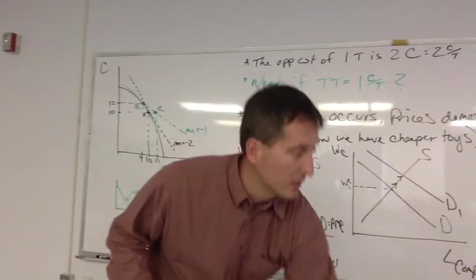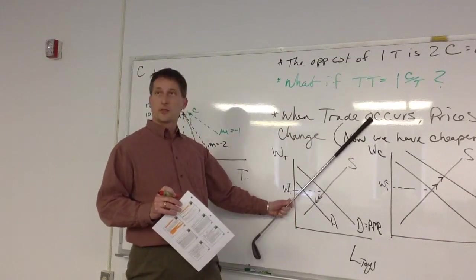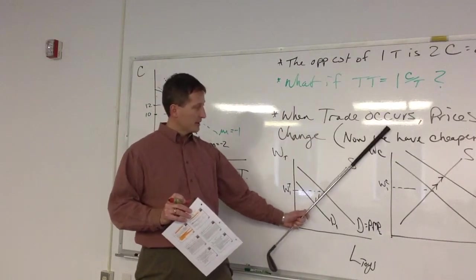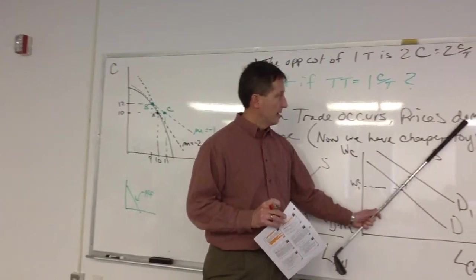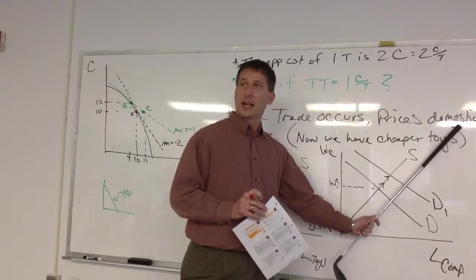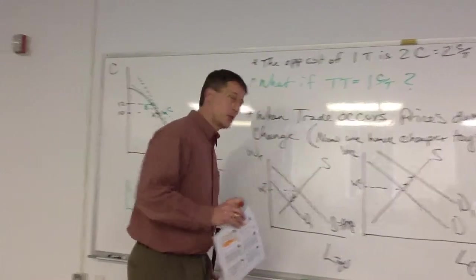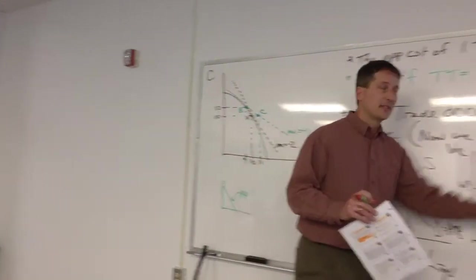So supply is going to do what for toys? Decrease. Decrease. Driving the wage up. Max, check out the golf club action. Right? So wages are going to head up. People are going to be attracted to the computer market. Wage is going to head down. And we get the equalization for transient differences.